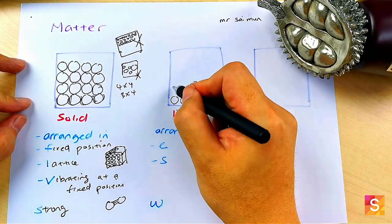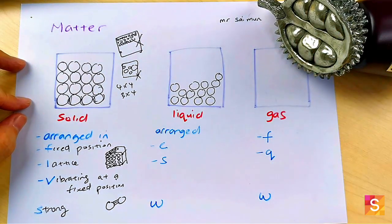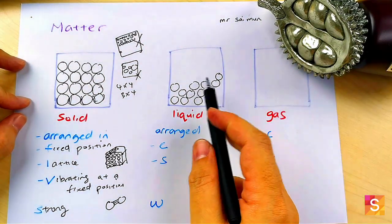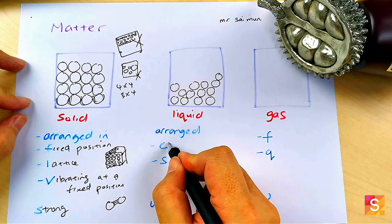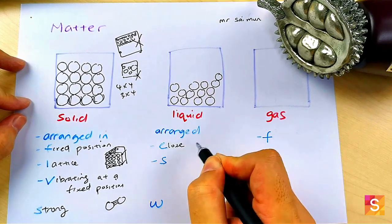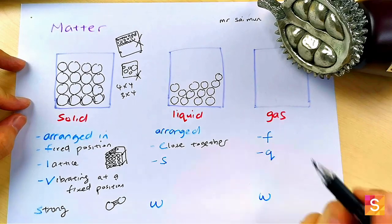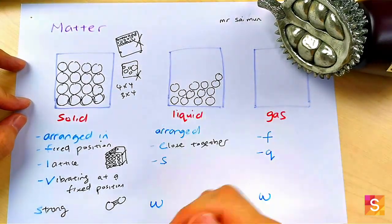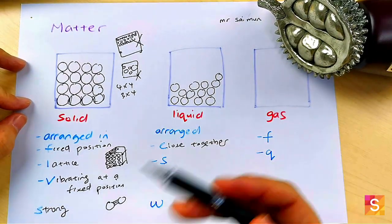If they ask what is the arrangement, they arrange close together. And then what is their motion? So another mark, explain what is the motion. They slide over each other.